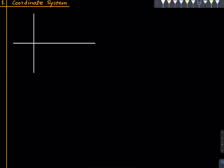So what do we mean by the coordinate plane or the coordinate system? We mean two perpendicular lines. The intersection of these perpendicular lines is called the origin. O is called the origin, and the coordinates...